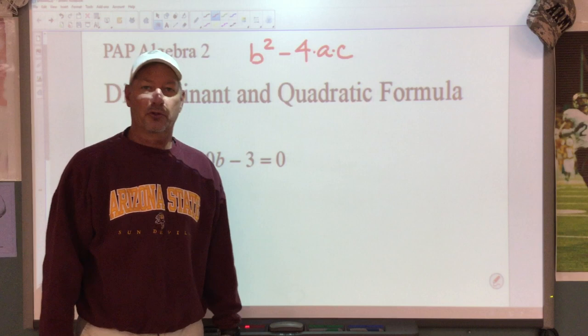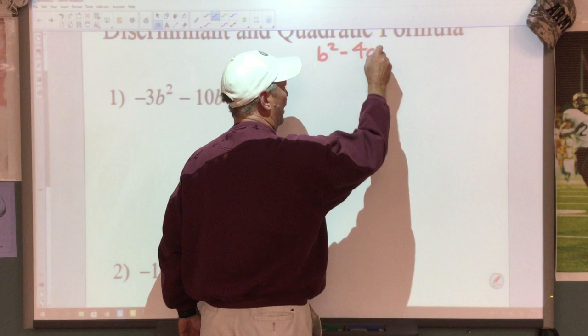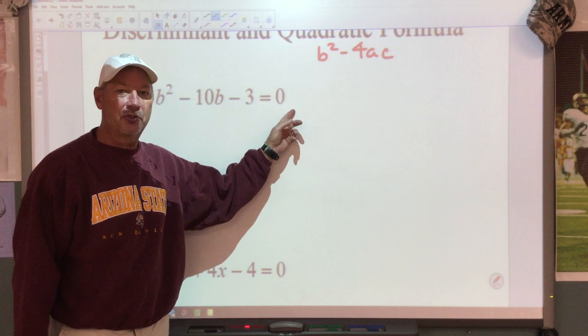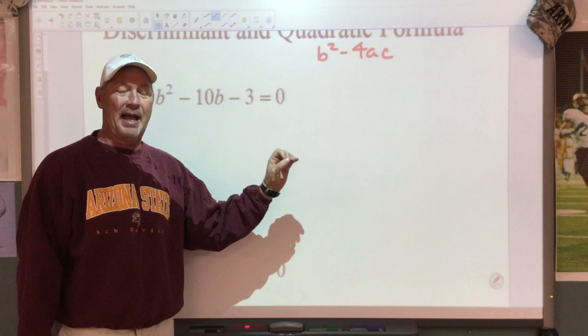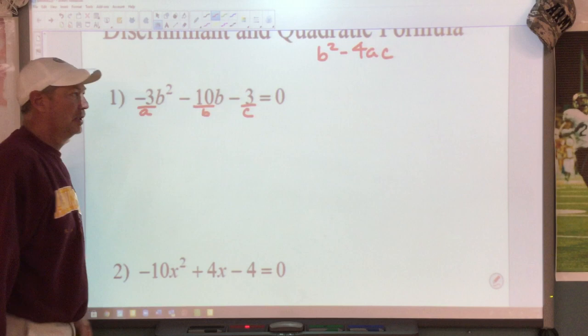So if we look at the first problem, let me bring that formula down again so you can see it: B squared minus 4AC. If you do not have your equation equal to zero, we will move things to all on one side to where we equal zero. You have to have it equal to zero to get started. We want to identify this is my A value, this is my B value, this is my C value.